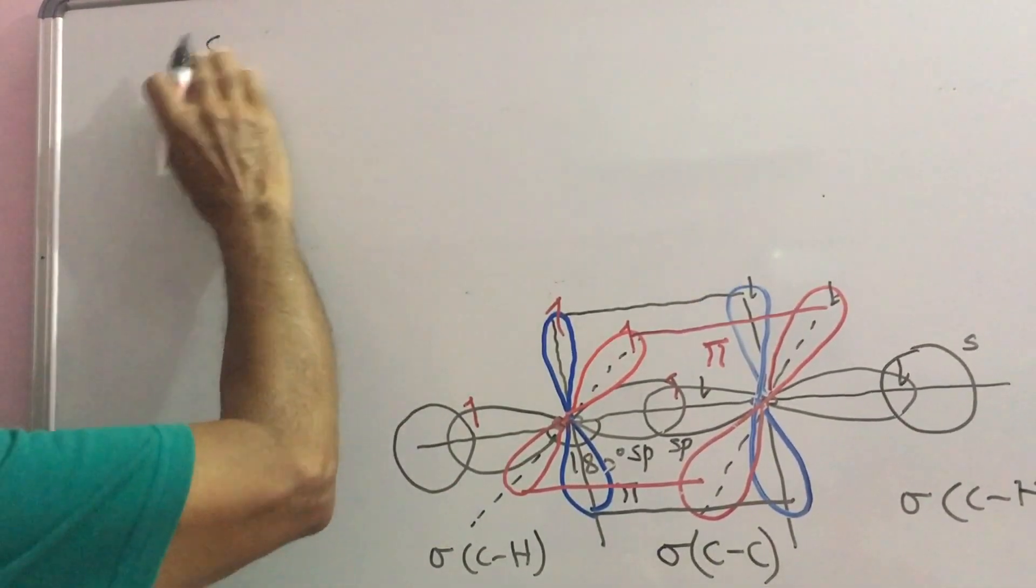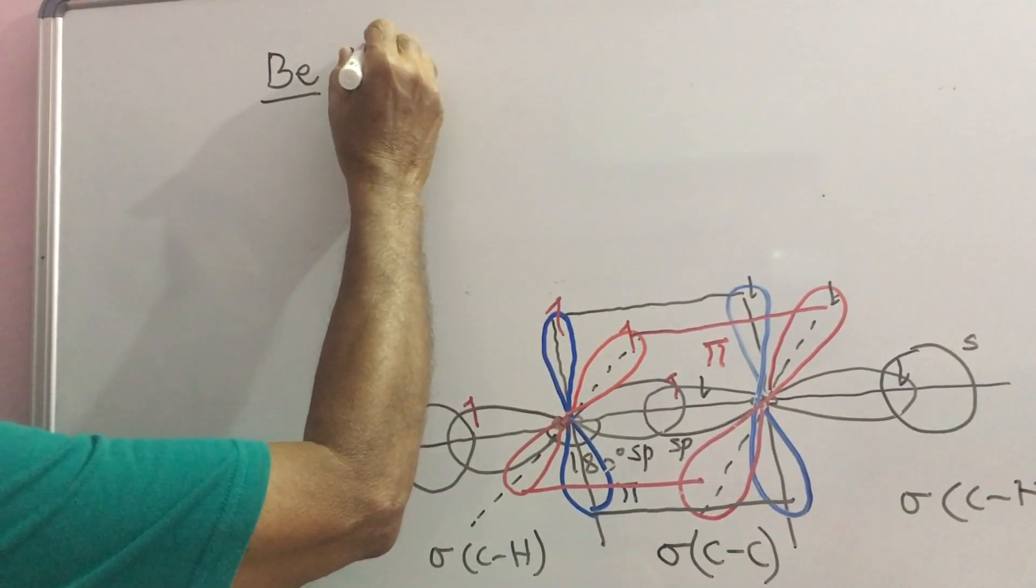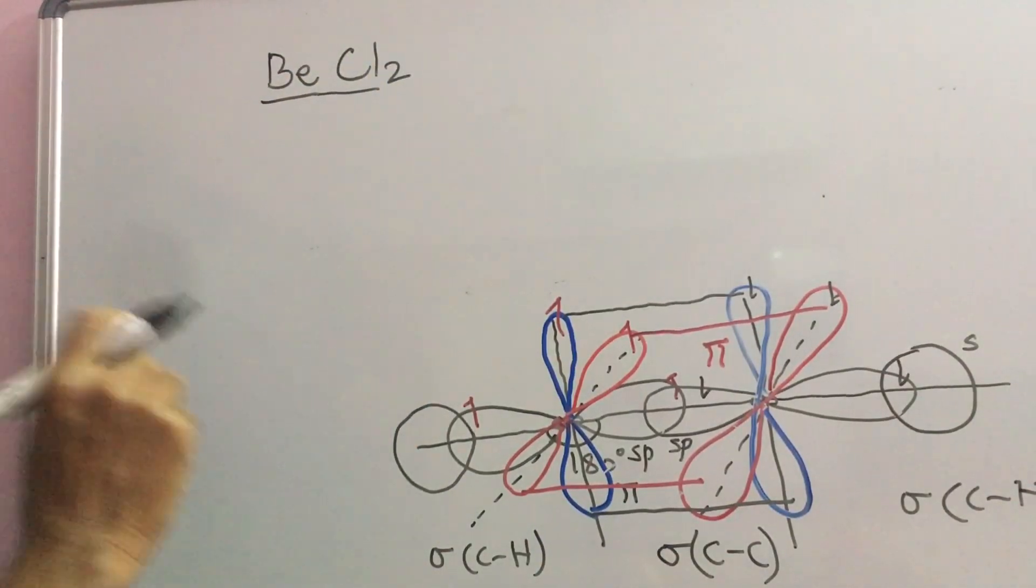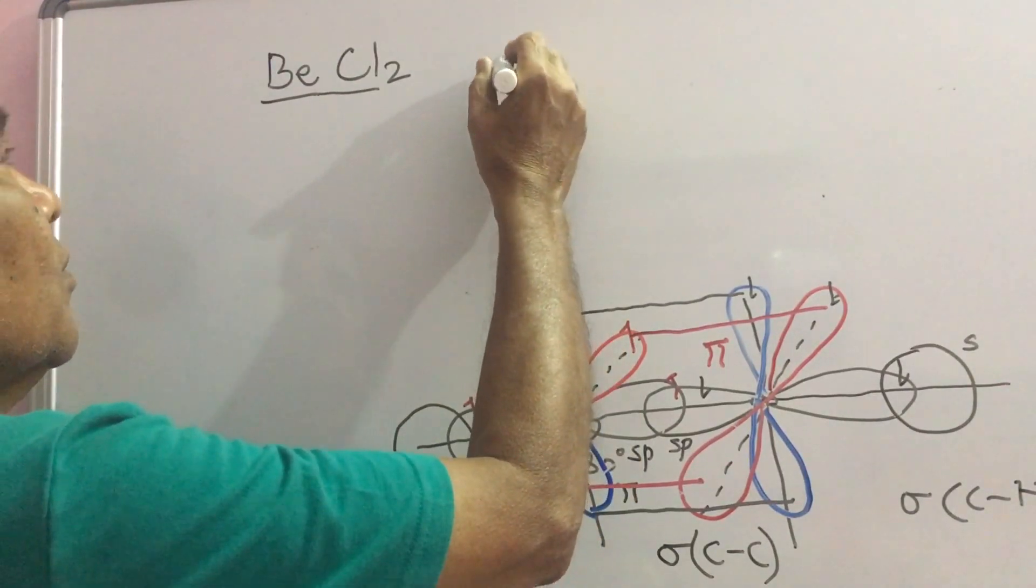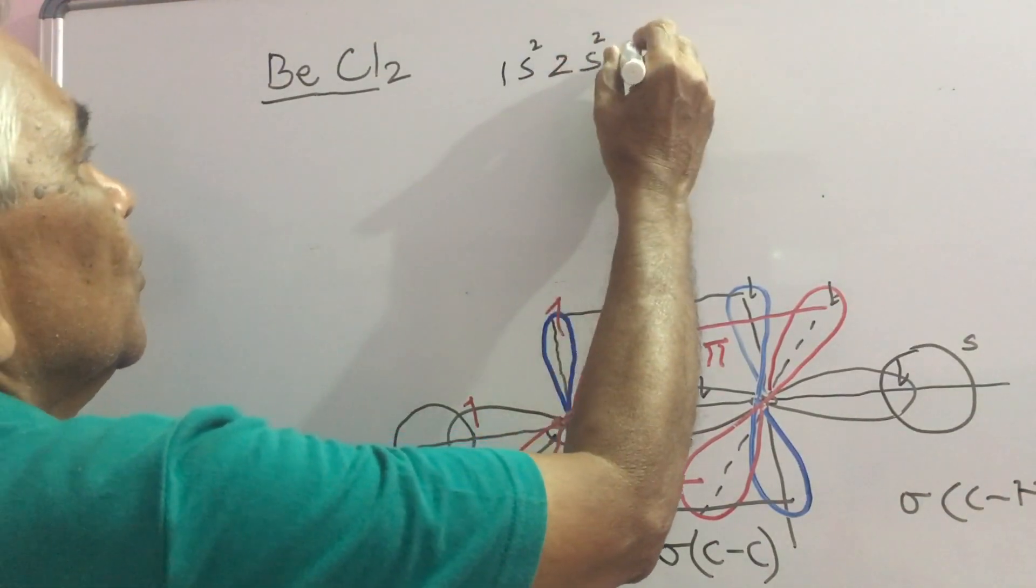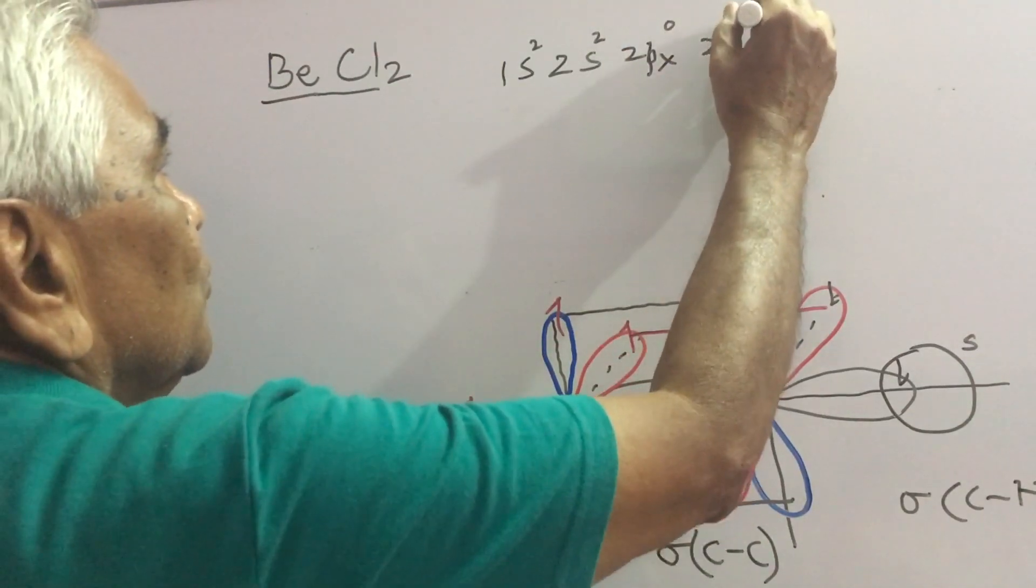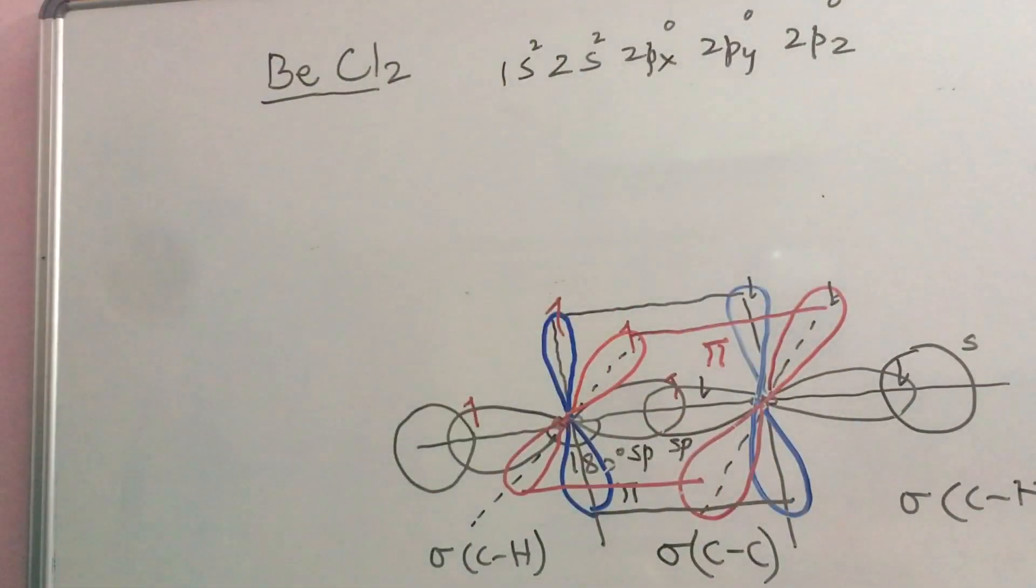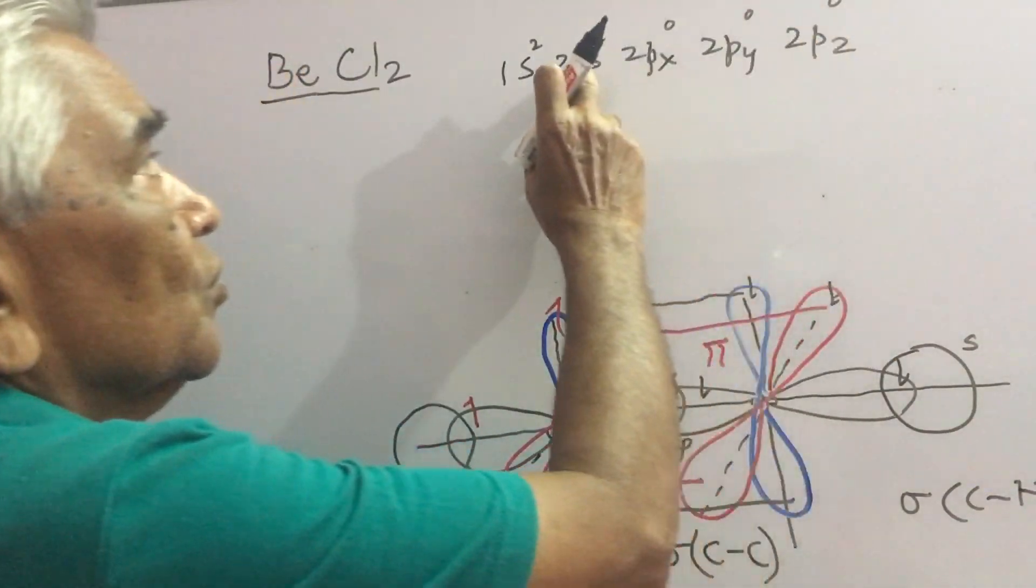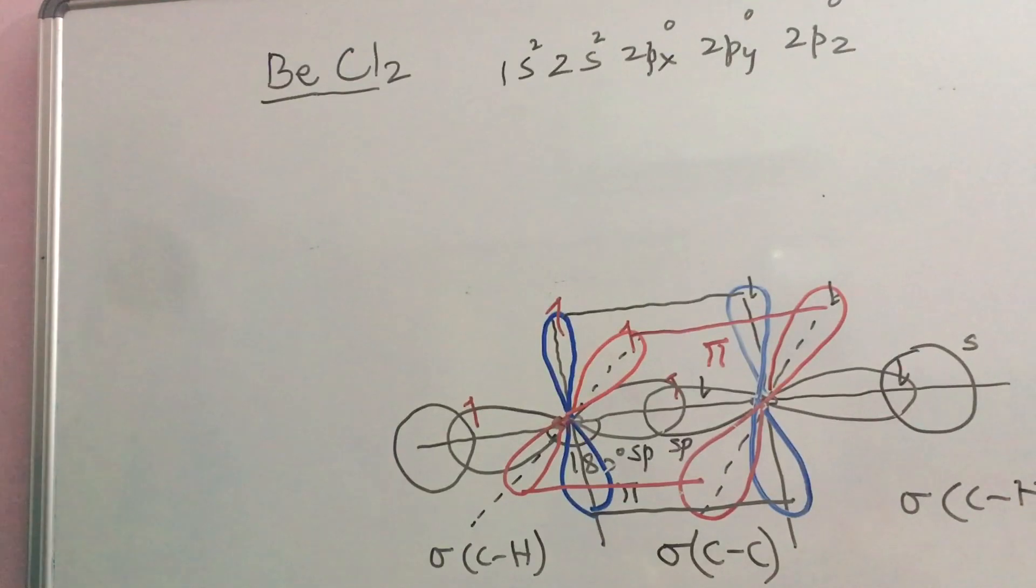There was beryllium and beryllium chloride is formed. So, beryllium has a configuration 1s2, 2s2, 2px0, 2py0, no electron in this and it appears that because there is no single unpaired electron, it must be zero-valent but actually it is not so.